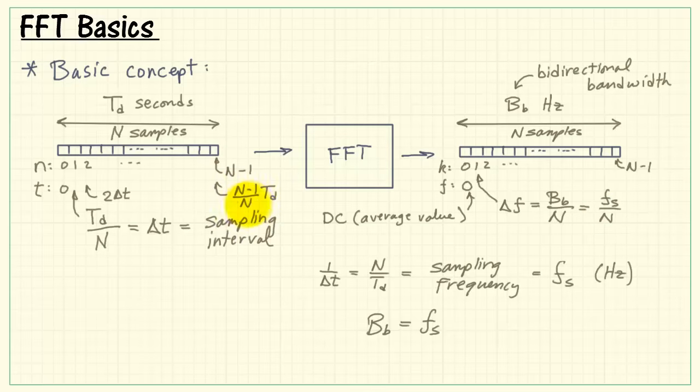Now just as over here we had n minus 1 divided by capital N times the total time duration, this last frequency in the array would be n minus 1 over capital N times the sampling frequency.